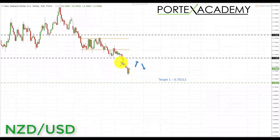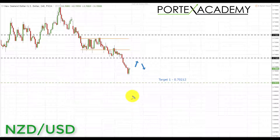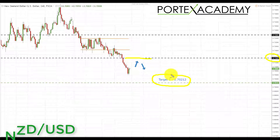The next pair is the NZD/USD. The New Zealand US dollar is trending to the downside and we're looking for further declines next week. We'd like to see a pullback and correction first so we can short at a better price. If we get a pullback to the key area of support broken turning resistance at the 0.71429, this is a great place to look for shorts and bearish formations and patterns to trade down towards the target of 0.70212.